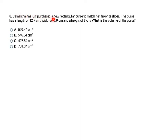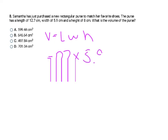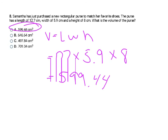The last problem: Samantha purchased a rectangular purse with a length of 12.7 cm, a width of 5.9 cm, and a height of 8 cm. Volume of a rectangular prism is length times width times height. Multiply 12.7 times 5.9, then times 8. The result is 599.44 cubic centimeters, which is answer choice A. Thank you for joining us today, and I hope you learned something new.